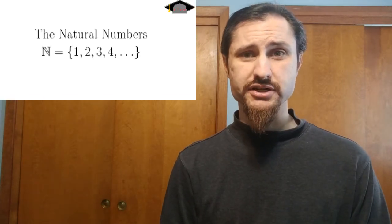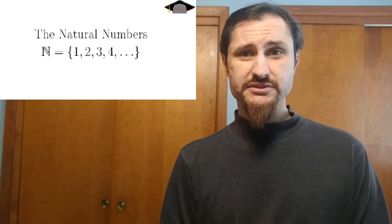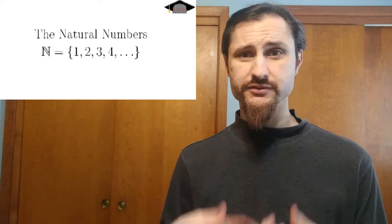The first numbers that human beings would have come up with thousands of years ago are what we today call the natural numbers, or we sometimes call them the counting numbers. And we call them the counting numbers because they're the numbers that we count with: one, two, three, four, five, etc. And they're also called the natural numbers because they're the ones that humans would naturally seek to invent.